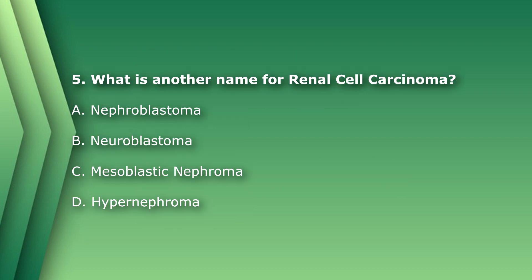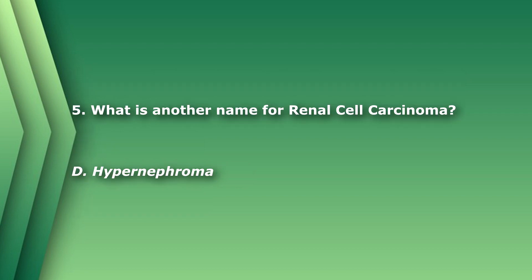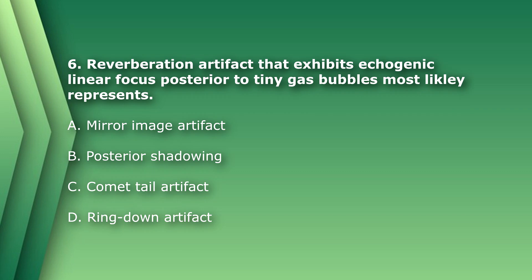Question 5: What is another name for renal cell carcinoma? A) nephroblastoma, B) neuroblastoma, C) mesoblastic nephroma, or D) hypernephroma. Renal cell carcinoma is also known as D) hypernephroma.